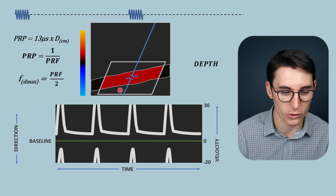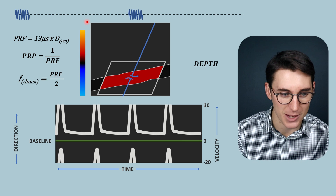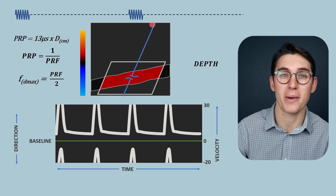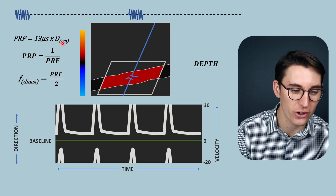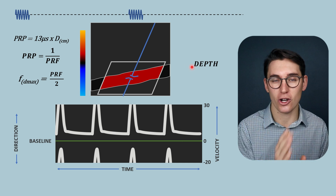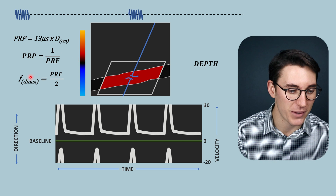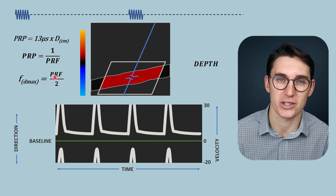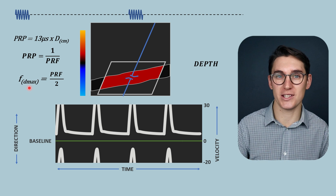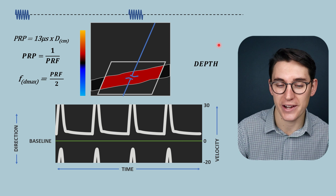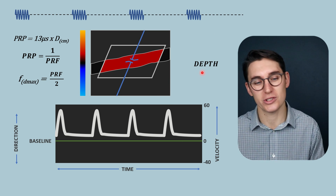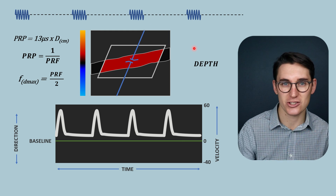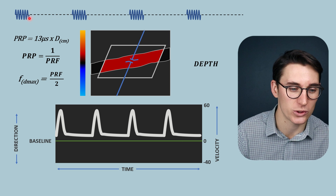In the first example, increased depth has resulted in an increase in pulse repetition period. The time it takes for that echo to return to our transducer has increased, and as a result the number of times we can sample per second has decreased. The amount of Doppler shift that we can calculate and subsequently convert into a velocity value has also decreased. So what can we do? If this vessel has a region at shallower depth, we can move our transducer there, increasing our pulse repetition frequency and sampling rate.